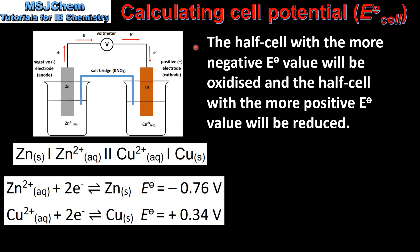The half cell with the more negative electrode potential value will be oxidized and the half cell with the more positive electrode potential value will be reduced. So if we look at these two values, we can see that Zinc has the more negative electrode potential value and Copper has the more positive electrode potential value. This means that the Zinc half cell will undergo oxidation and the Copper half cell will undergo reduction.